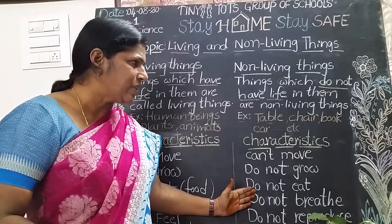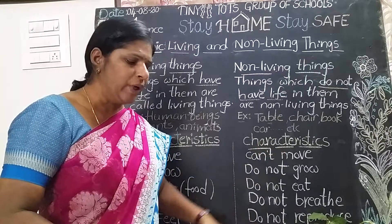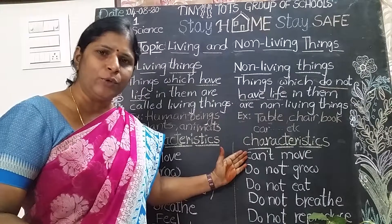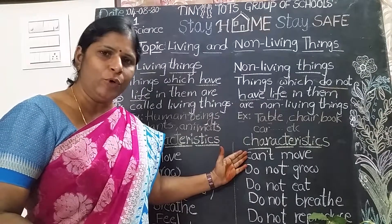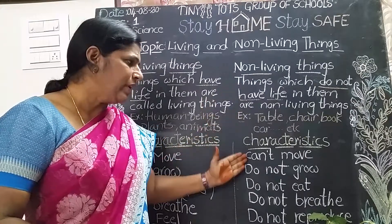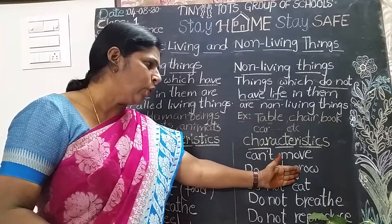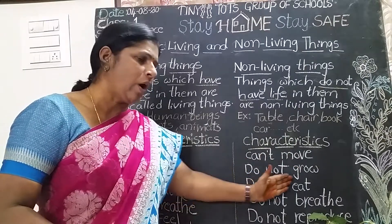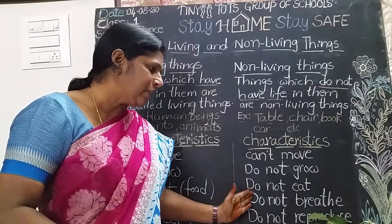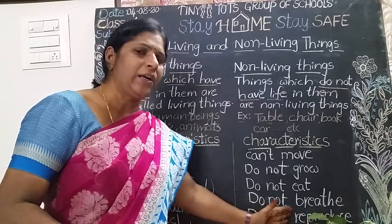What are the characteristic features of non-living things? Non-living things cannot move — does a table move? No. Does a chair move like you? No. Non-living things do not grow. Non-living things do not eat like you. Non-living things do not breathe.